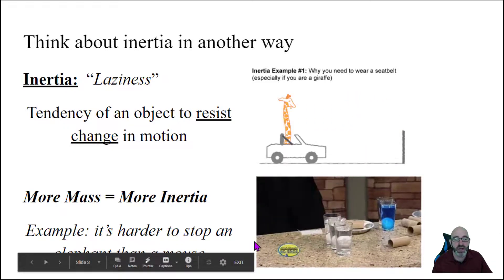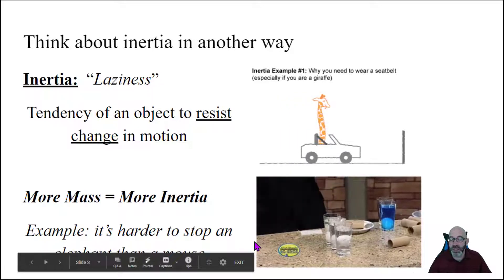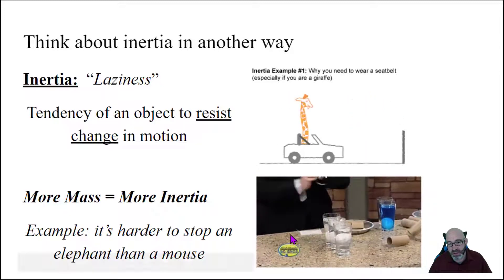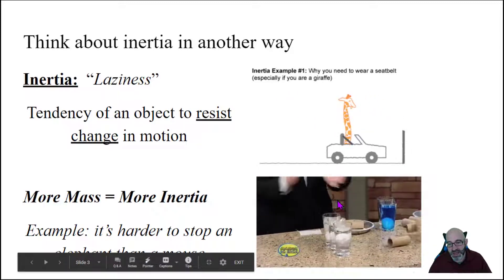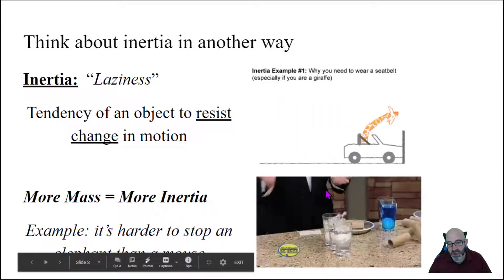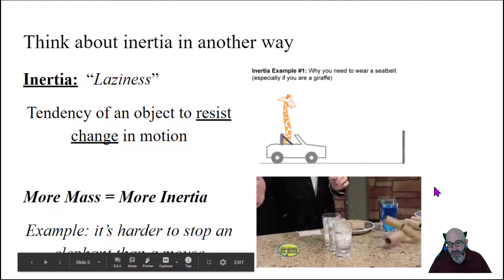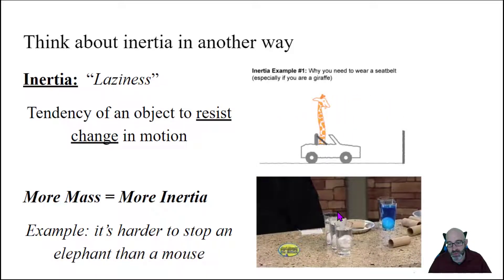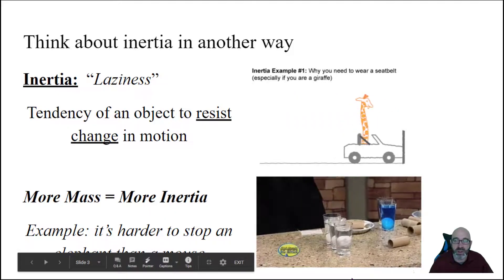For example, it's harder to stop an elephant, a lot of mass, than a mouse. And this other GIF with the eggs shows this. The eggs have inertia. They do not want to move even though the tray moves out from underneath them. Once the tray moves out, there's no support force, and the eggs fall in the glass.